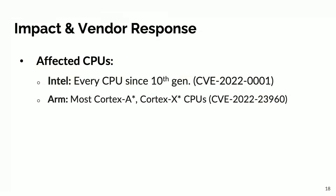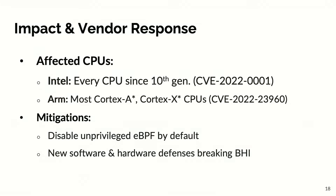We disclosed our findings, and both Intel and ARM confirmed them. Intel confirmed that every CPU since 10th generation is affected, and ARM said that most Cortex-A, Cortex-X, and even real-time Cortex cores are affected. They released mitigations, with the main one being disabling privileged BPF by default — since our exploit relied on BPF gadgets and indirect branches — and they also worked on new software defenses to break our BHI primitive, preventing user-space history from being injected into kernel space.